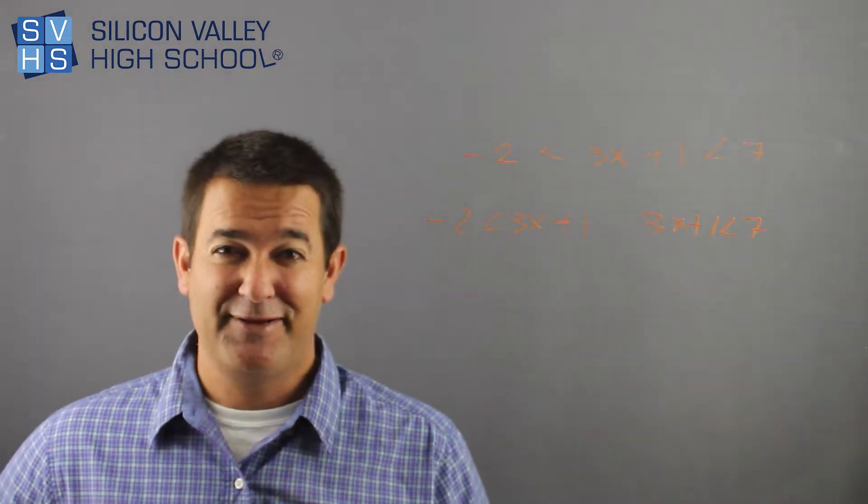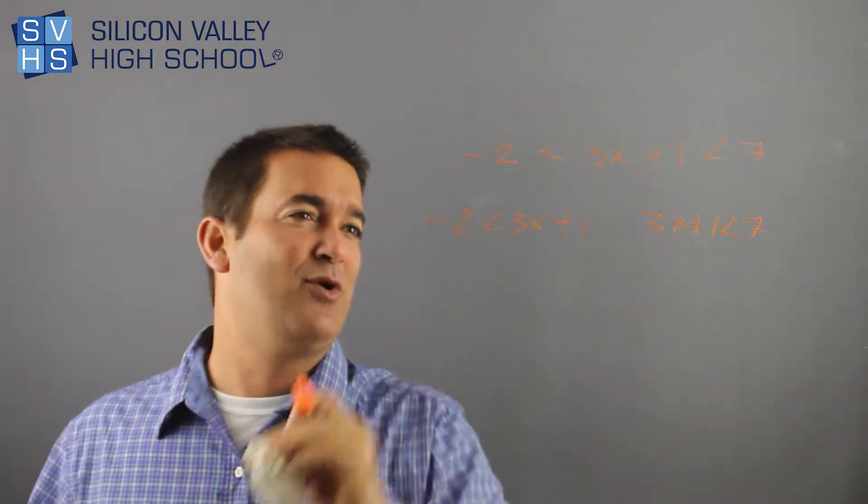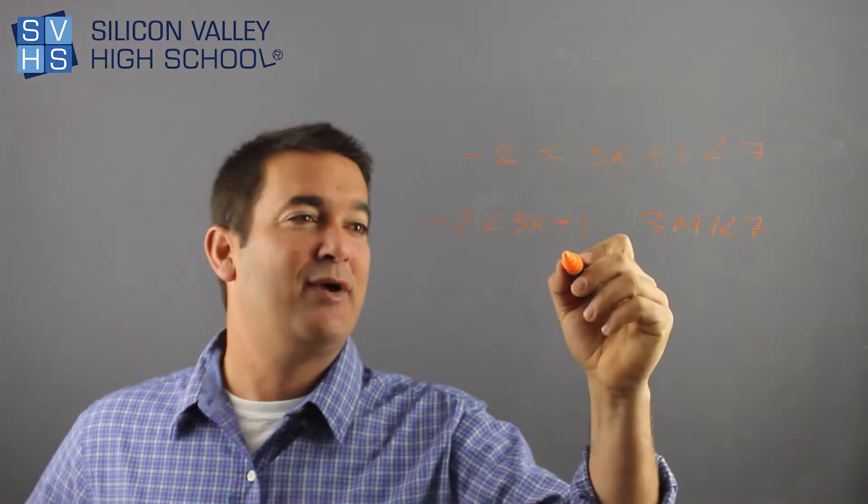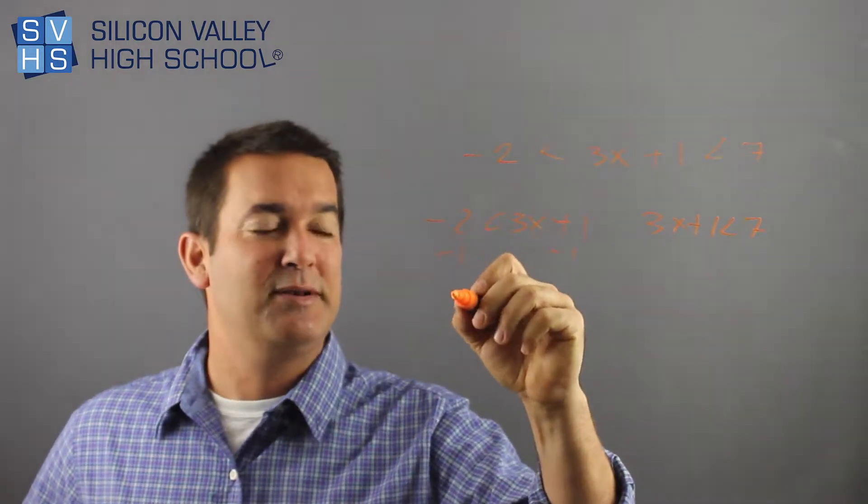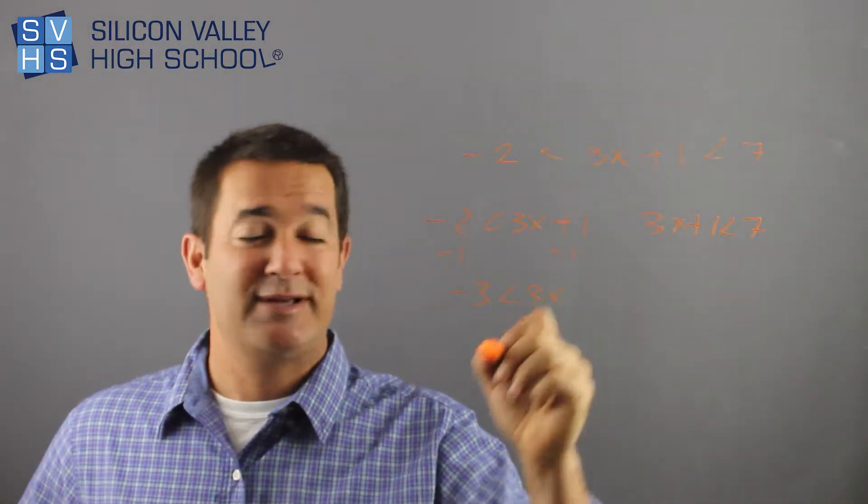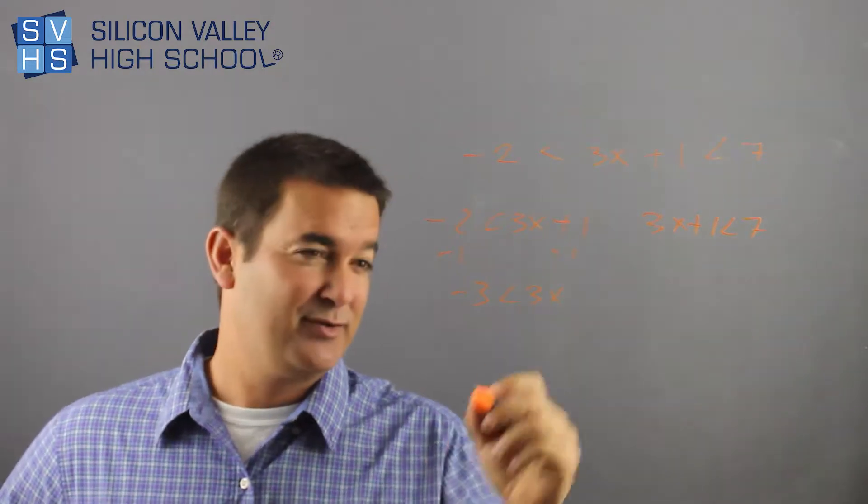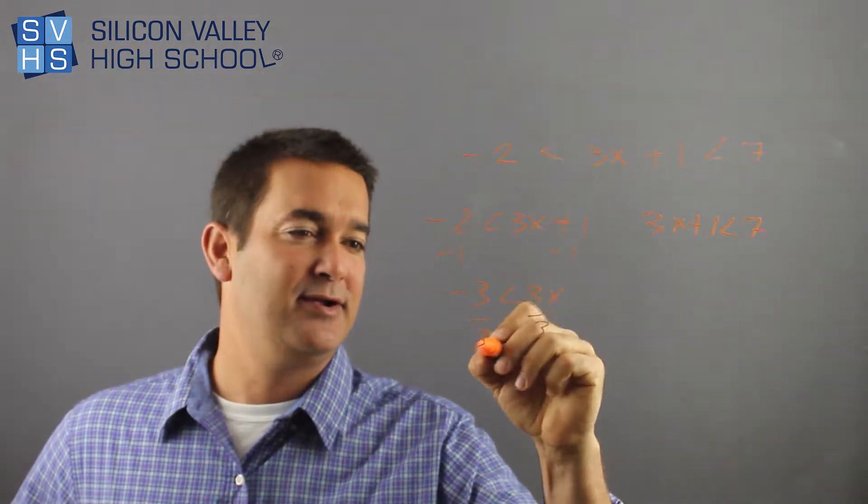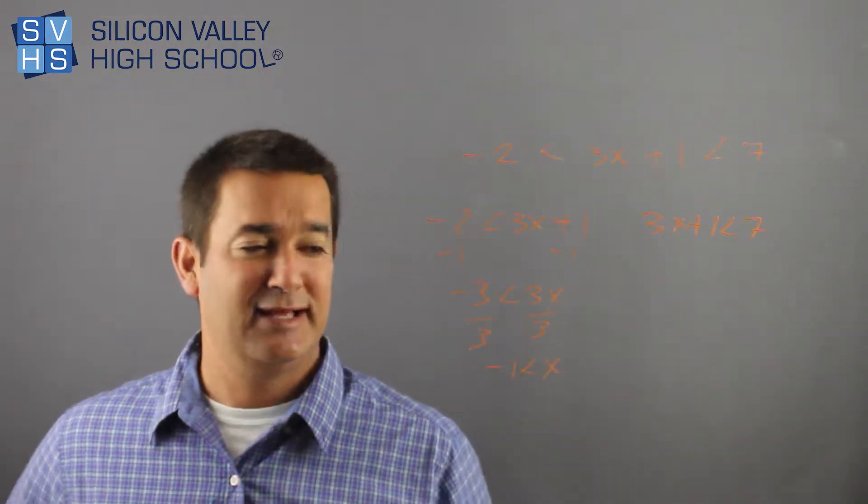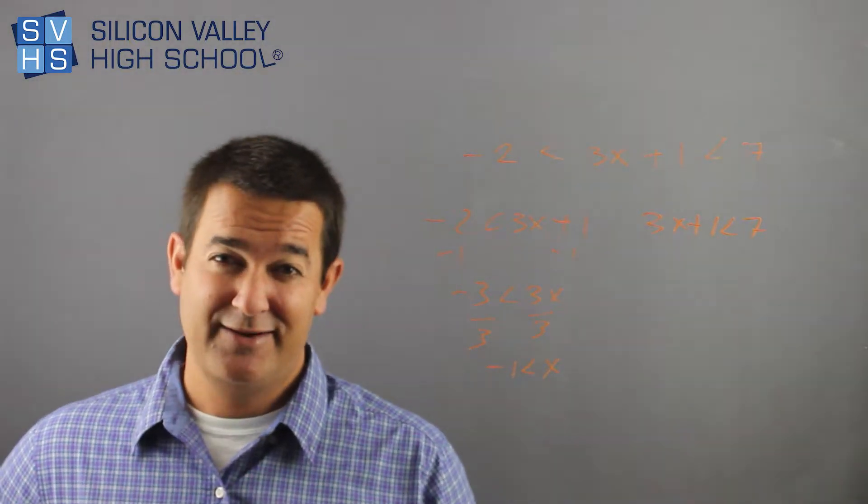And then, this goes back to earlier videos, well that's easy, I'll just solve these inequalities. This one right here, you say minus one minus one, negative three is less than 3x. Divide both sides by your three to get x alone, and then you're done, negative one is less than x, or x is greater than negative one.